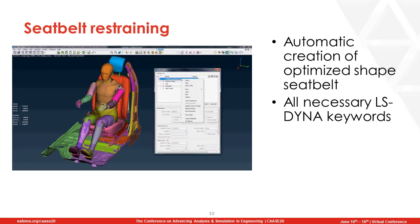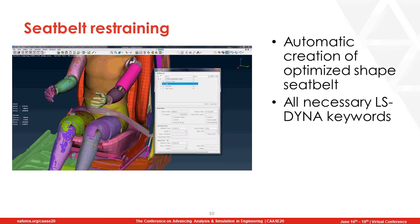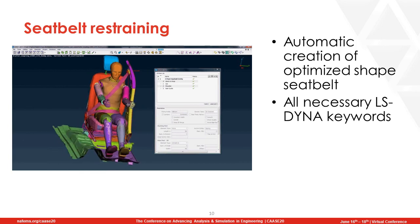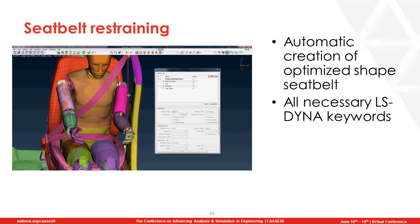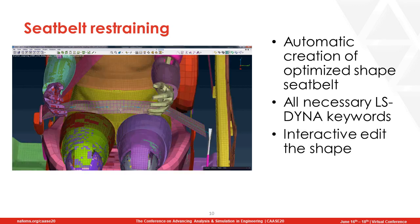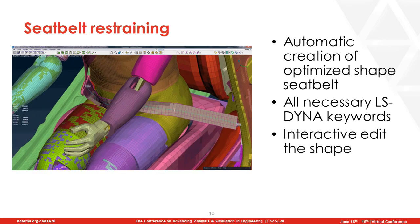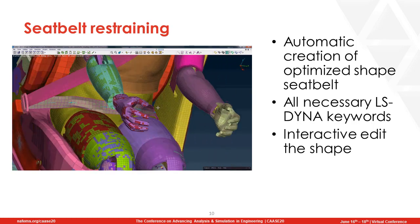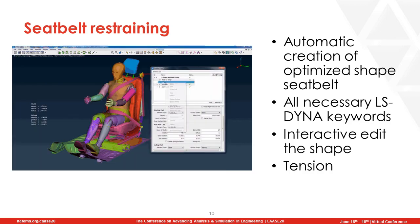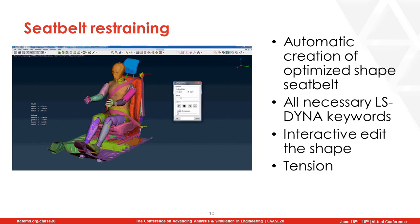After positioning the dummy on the seat, we have to restrain it with a seatbelt using the seatbelt tool of ANZA. There is an automatic creation of an optimized shape seatbelt, and all necessary LS-Dyna keywords are created. If the automatically created seatbelt needs improvement, you can interactively edit the shape of the belt or apply tension to stretch it, using the multi-body dynamic solver of ANZA.